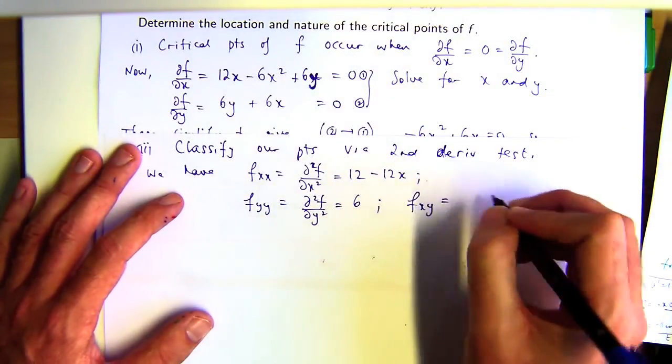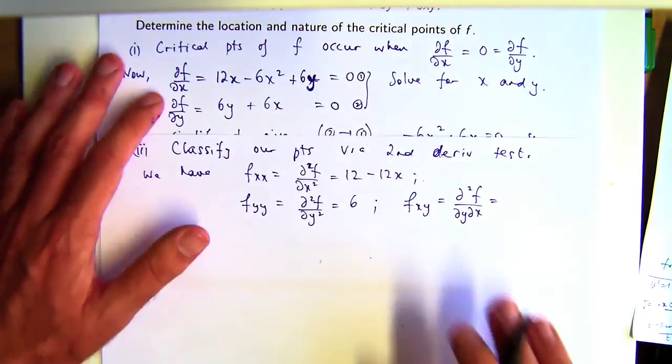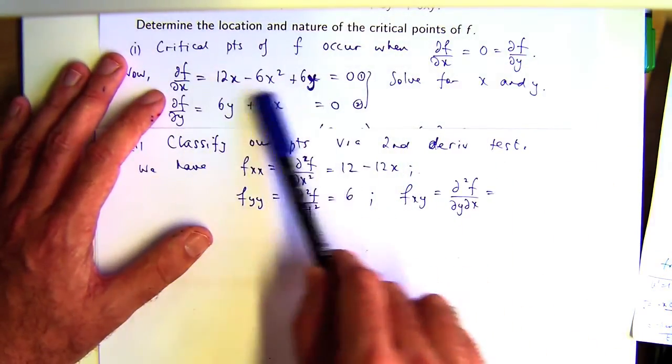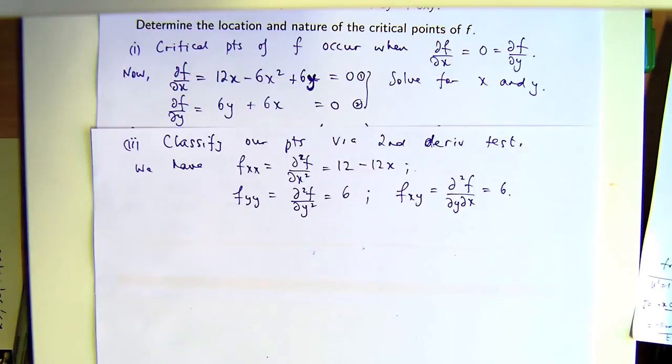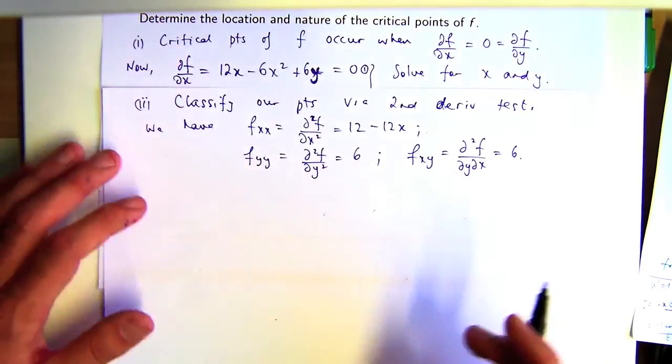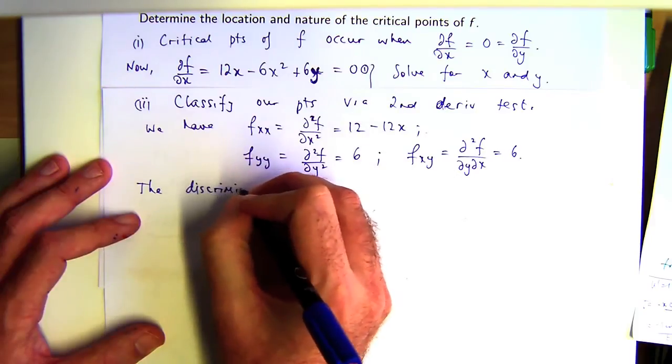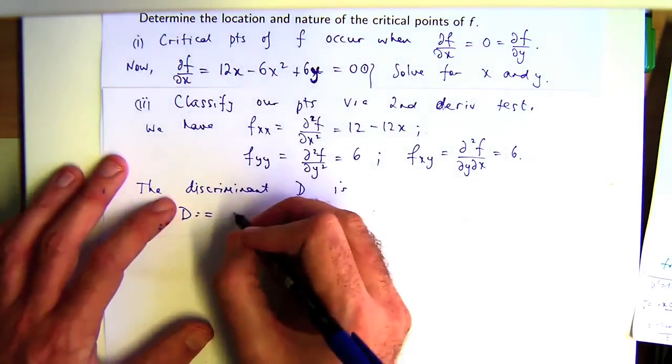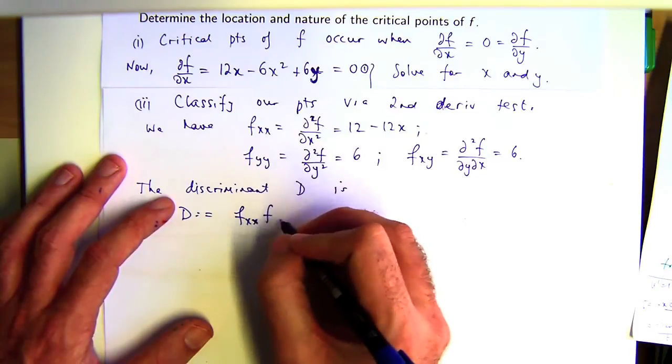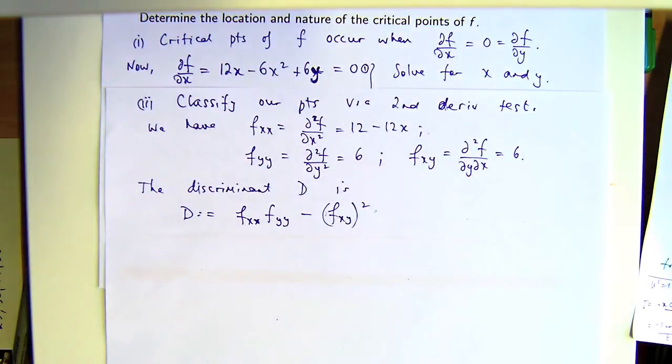What about the mixed partial? That's d squared f dy dx. It doesn't matter which order you do them. Let's take this derivative and differentiate it with respect to y. So I get a 6 there. Now, given that information, I can combine them to form what's known as a discriminant. So the discriminant D is defined as the following: it is the second order non-mixed partials multiplied together minus the square of the mixed partial. Now, that'll change depending on what point you're at. So that discriminant D really depends on the two things, x and y.